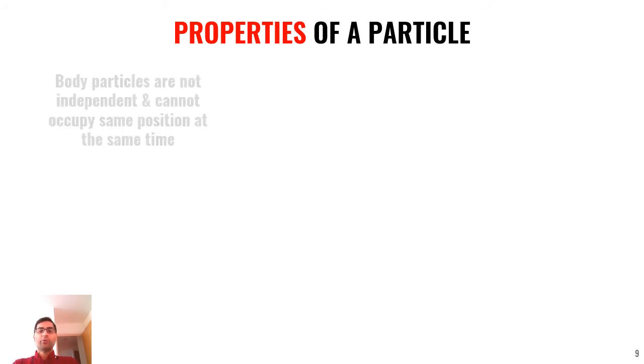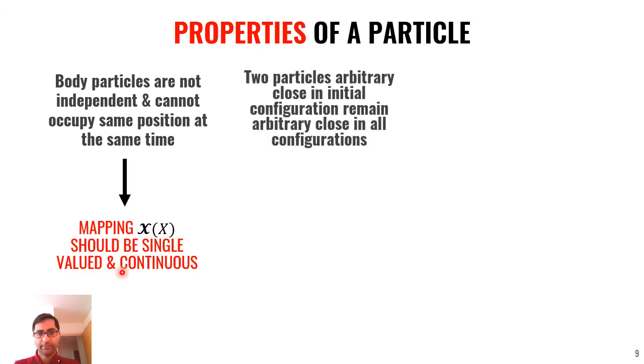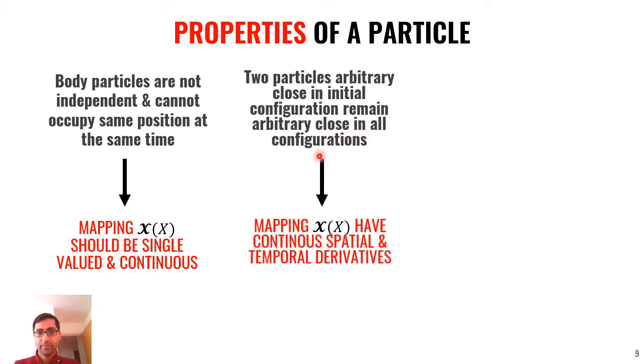Okay, some properties of the particle. Body particles are not independent and cannot occupy same position at the same time. So, mapping for configuration should be single-valued and continuous. Two particles arbitrarily close in initial configuration remain arbitrarily close in all configurations. So, the mapping have continuous spatial and temporal derivative.